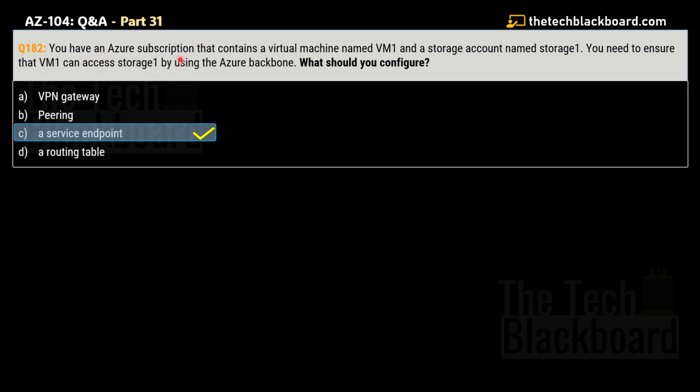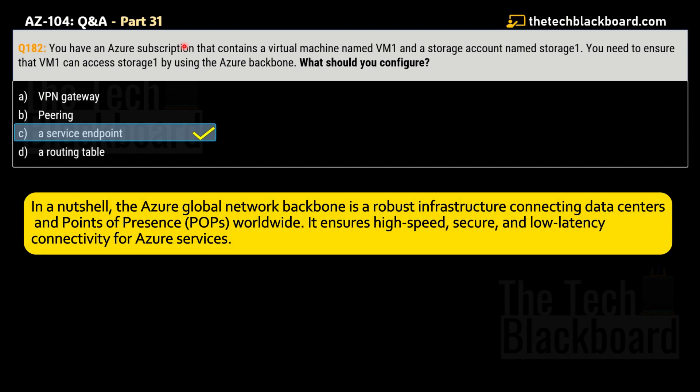The correct answer is option C — a Service Endpoint. To enable the virtual machine to access Storage1 using private IP addresses, you need to use a service endpoint. Virtual network service endpoints provide secure and direct connectivity to Azure services over an optimized route called the Azure backbone network, and endpoints allow you to secure your critical Azure service resources to only your Azure virtual network.